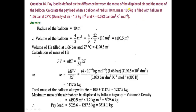Mass of the balloon is 100 kg. This much helium is filled in the balloon. Adding these two: 100 + 1117.5 = 1217.5 kg. That is the total mass of the balloon along with helium gas.